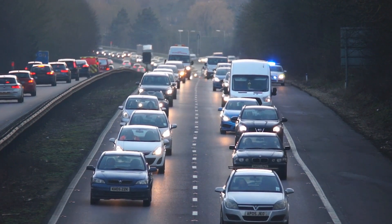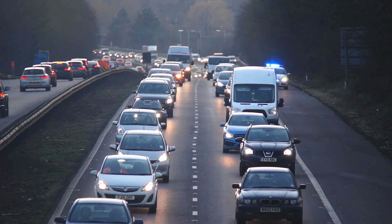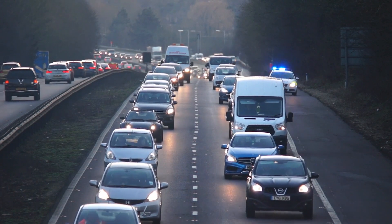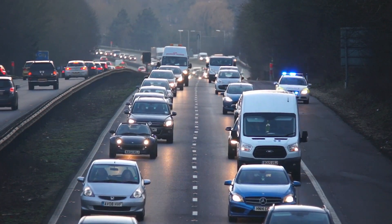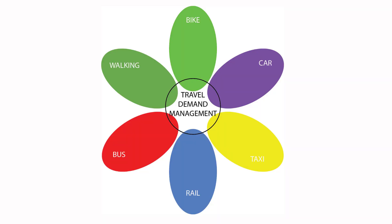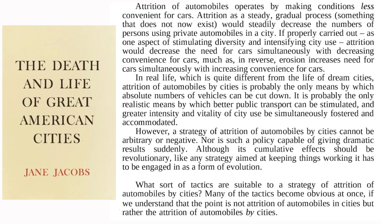...for both financial and environmental reasons, the emphasis shifted to post-modern travel demand management, which can also be described as 'predict and decide.' Often the decision is to reduce the use of private cars, following the policy Jane Jacobs advocated as the attrition of automobiles by cities.